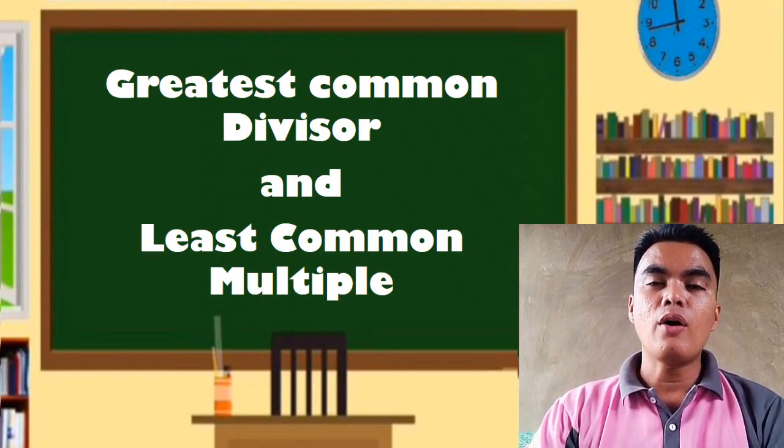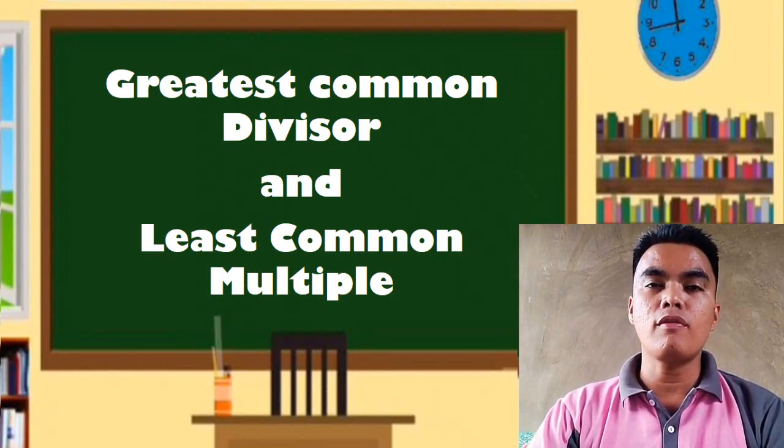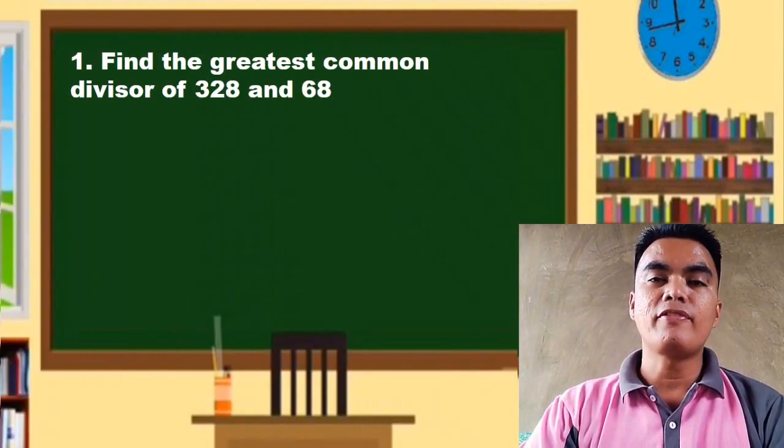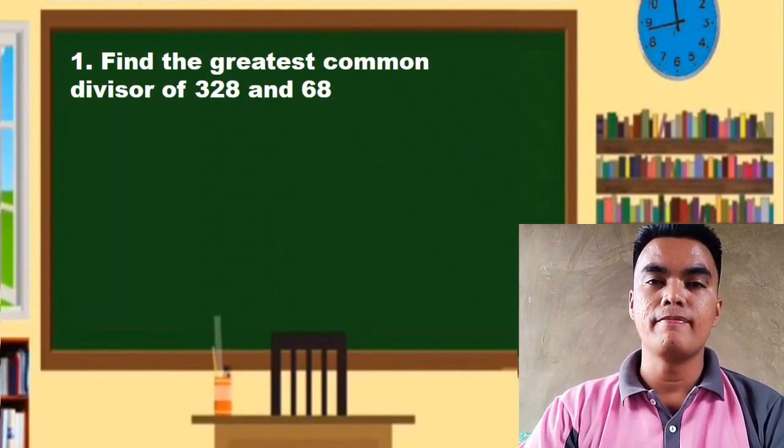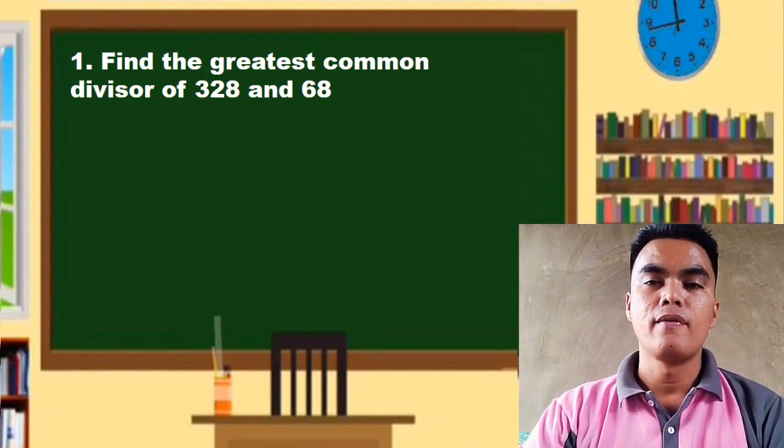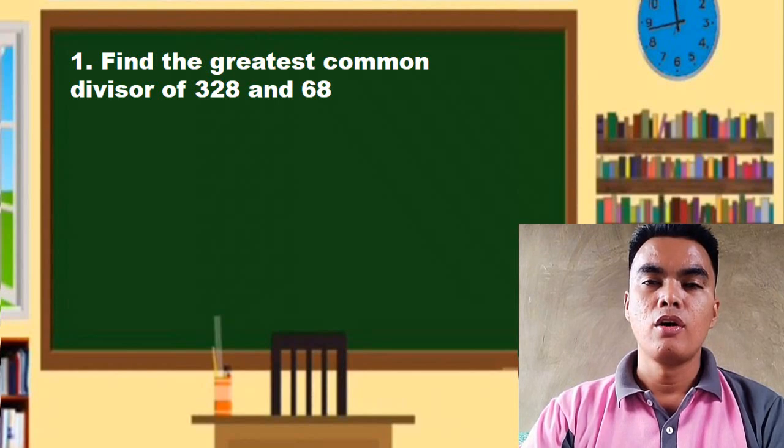Now how could we solve the greatest common factor of given numbers? Let us have an example. We have the first example: 328 and 68. Now what is the greatest common divisor of these two numbers? We can solve the greatest common divisor...